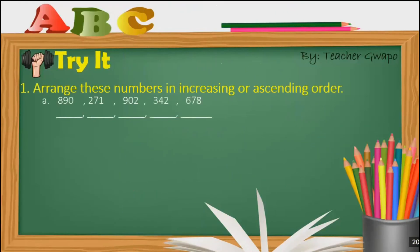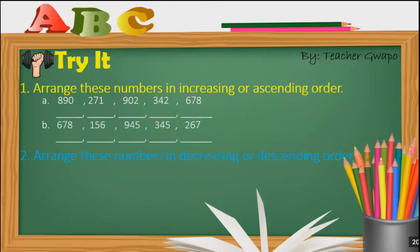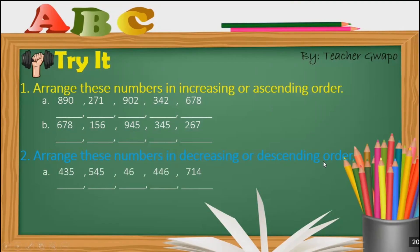Now try it — I know you can do it by yourselves. You are going to arrange numbers in increasing or ascending order — write the smallest number first and the greatest number last. There are two questions: letter A and B. For number two, arrange the numbers in decreasing or descending order, starting from the greatest number down to the smallest. There are also two questions: letter A and B.